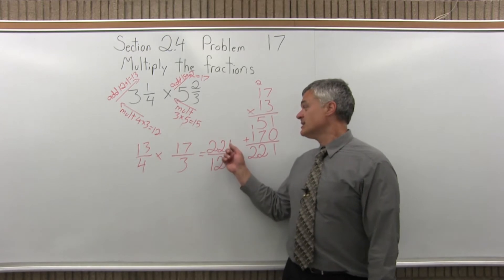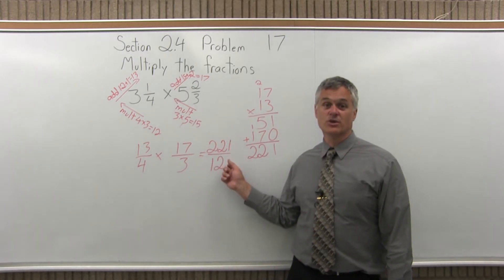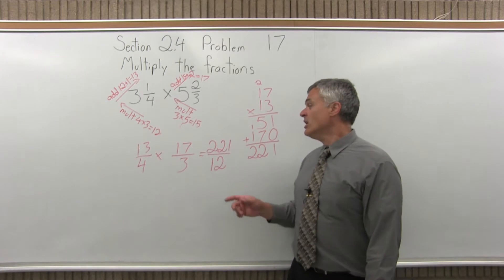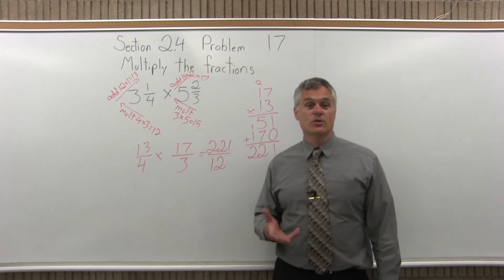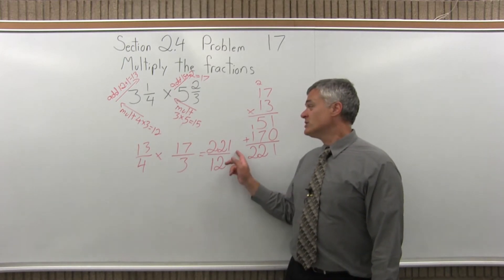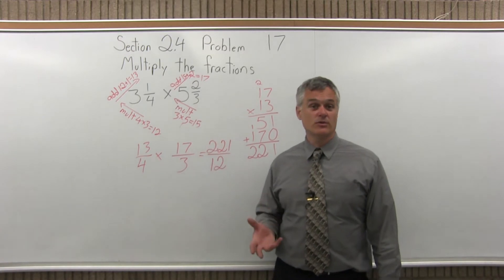Now this is an improper fraction. The numerator is larger than the denominator, that's what makes it improper. You can, if you like, convert that to a mixed number. If the directions don't specifically require you to do that, you don't have to. The 221 over 12 is a perfectly good result.